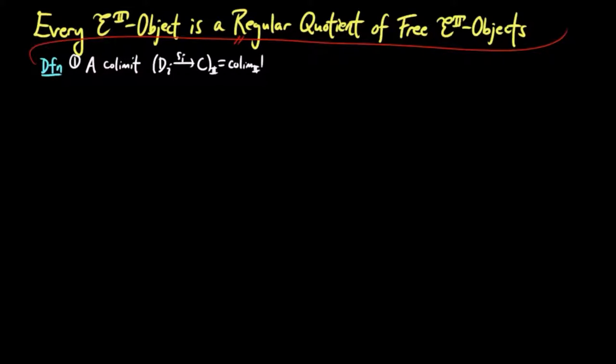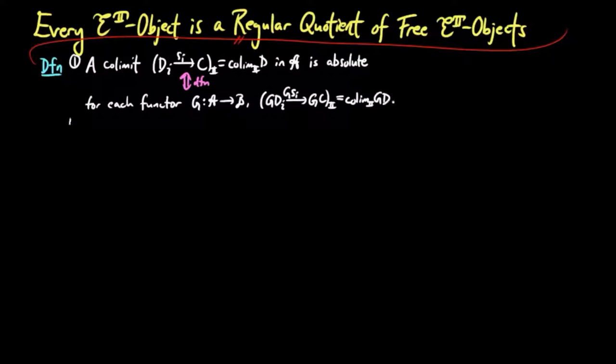One, a colimit SI of a diagram DNA is absolute if and only if for each functor G, G preserves this colimit.